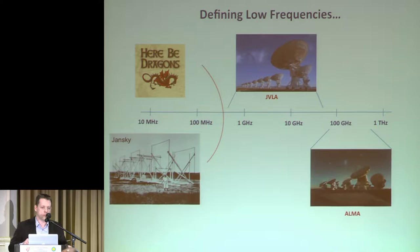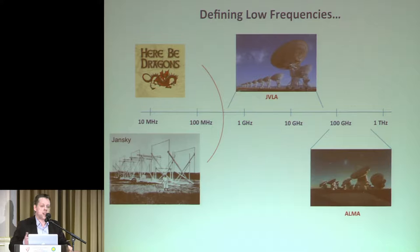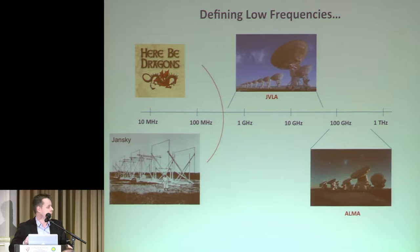Pulsars were discovered in 1967-68 with observations at 80 megahertz. What happened in the 50s and 60s was a progression towards higher frequencies, motivated by a number of factors. It was easier to build dish telescopes with better sensitivity, with receivers not limited by sky noise but by their own temperatures. Going to higher frequencies also meant better resolution and better localization of sources. That led to telescopes marching to ever-higher frequencies, like the JVLA at gigahertz frequencies, and more recently ALMA operating at hundreds of gigahertz.